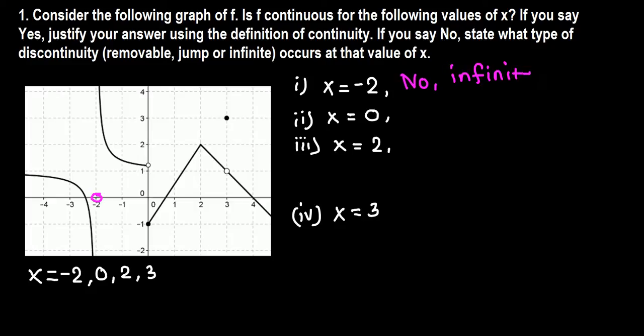Infinite discontinuity. At x equals 0, we have a jump. The limit does not exist, so it's not continuous, and the name of the discontinuity is jump.